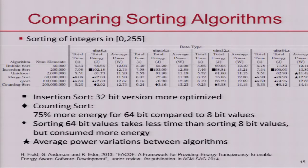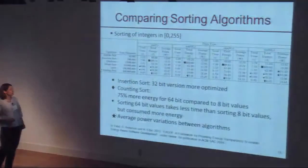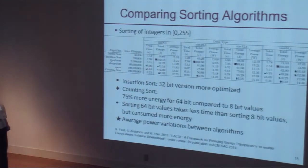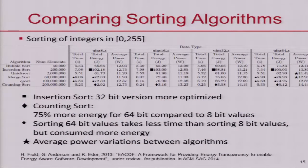Without going into a lot of detail, the very fact that I've got performance data next to energy and power data allows me to make interesting observations — such as, for this algorithm the 32-bit version seems to be more optimized, breaking an otherwise increasing trend. Or it seems to be more time-efficient to sort 64-bit wide integers compared to 8-bit wide integers, yet more energy is consumed in the process. If I've got this information available, I can select the right algorithm for the problem I want to solve. That is the value of energy transparency.